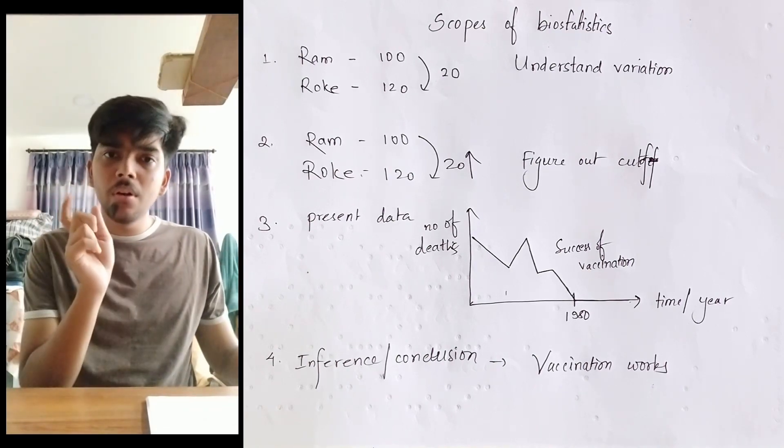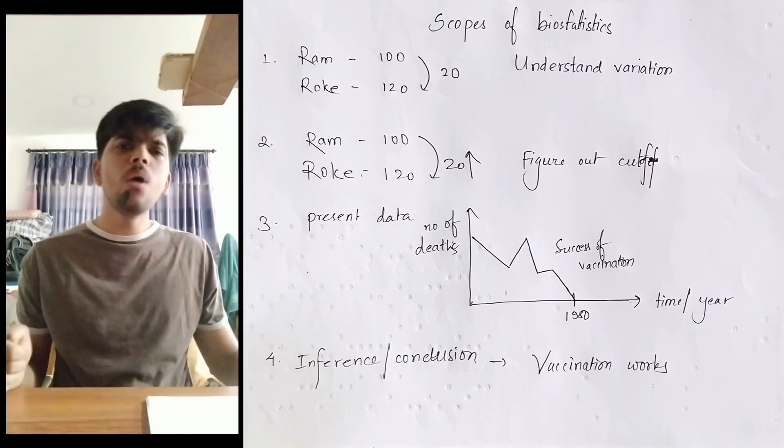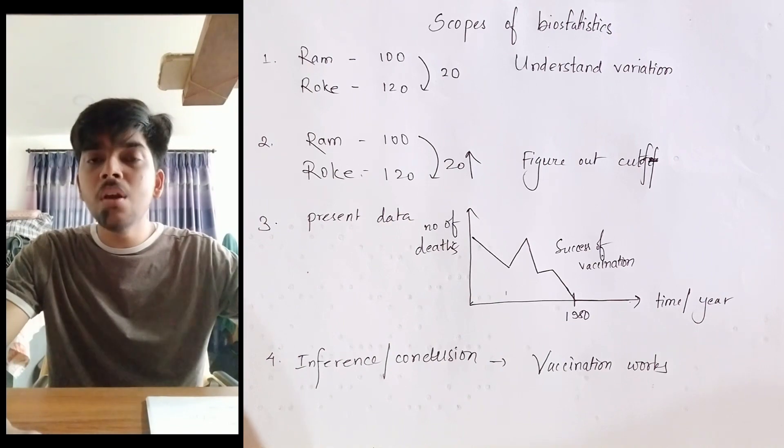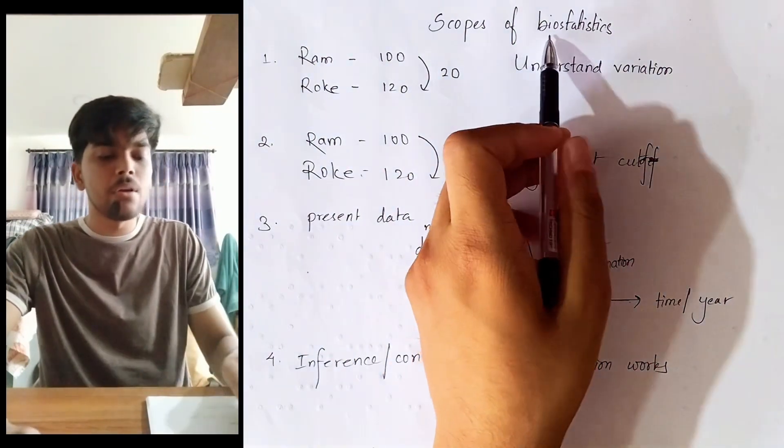We know that with the help of a certain number above which people are diabetic and below which people are healthy. And that particular number is the cutoff. And how exactly do we know this cutoff? We are able to figure out the cutoff with the help of biostatistics.